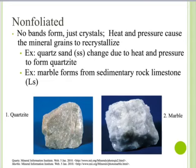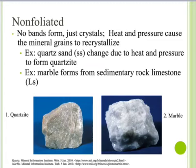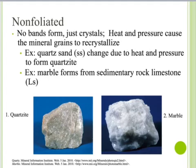The second type of metamorphic rocks are non-foliated rocks. Here, there are no bands, just crystals. This is because the heat and pressure cause the mineral grains in the rocks to recrystallize. Two examples: when quartz sandstone has heat and pressure added to it, it will turn into quartzite. The next example is limestone — when you add heat and pressure, it will turn into marble. Notice how both examples do not have any layers or bands, because they're non-foliated.